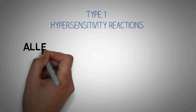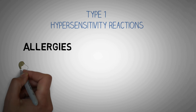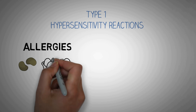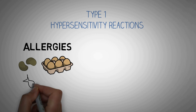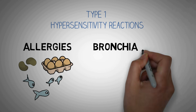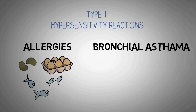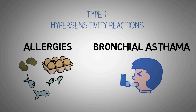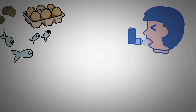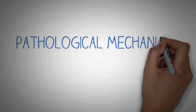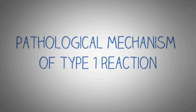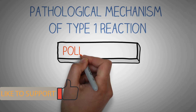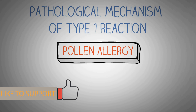Allergies are a classic example of type 1 hypersensitivity reaction, which can be allergies to foods like peanuts, eggs, fish, or allergies to dust and pollen. Bronchial asthma is also an example of type 1 hypersensitivity reaction. Now let's look at the pathological mechanism involved in type 1 reaction, and to understand this we are going to take the example of how a person develops dust or pollen allergy.